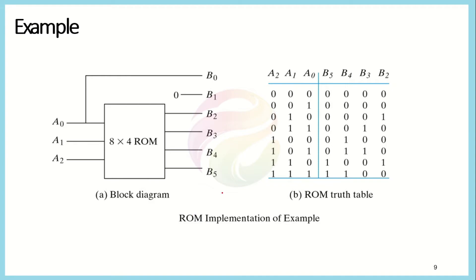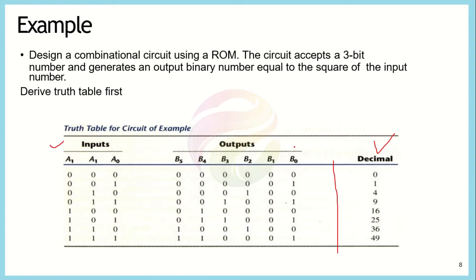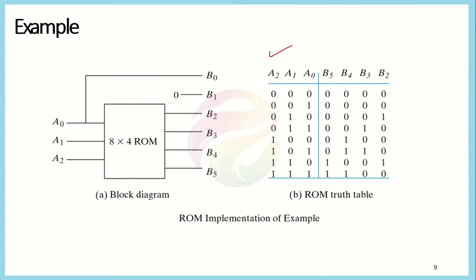Looking at this table in detail, we can minimize the circuit. For example, b0 is equivalent to a0, so we just connect a0 directly to output b0. Also, b1 is zero for all combinations, so it can be permanently fixed to zero. This reduces the table to three inputs and four outputs, since b0 and b1 are already determined. In the reduced table, b0 is connected to a0 and b1 is permanently connected to zero.